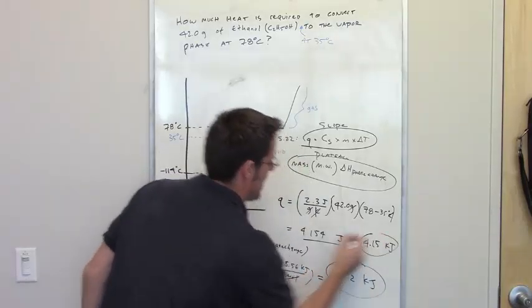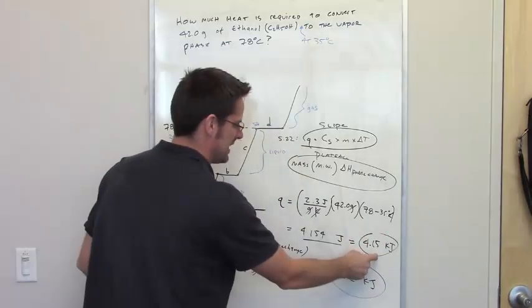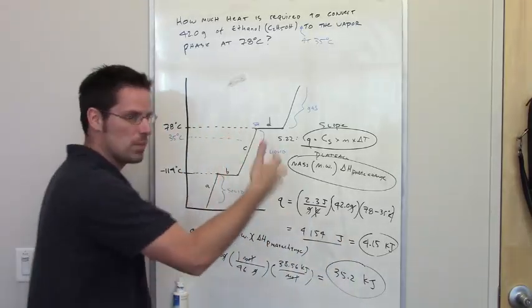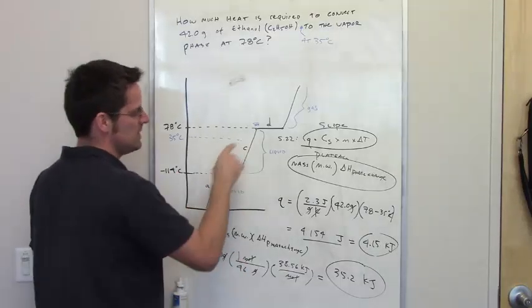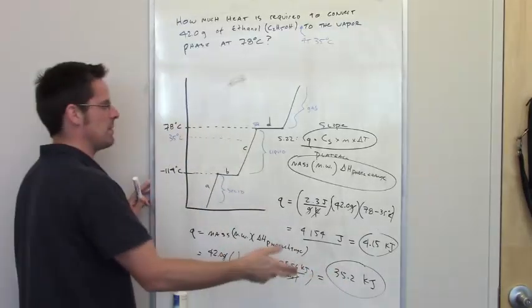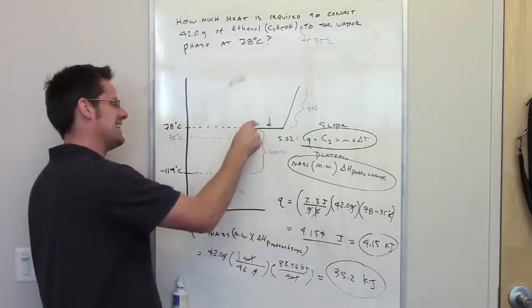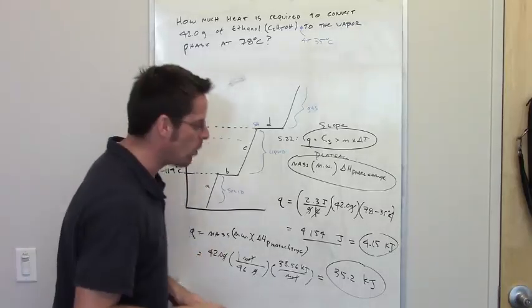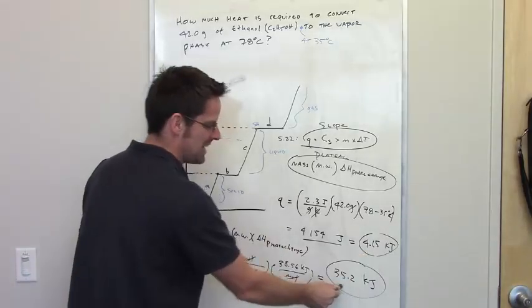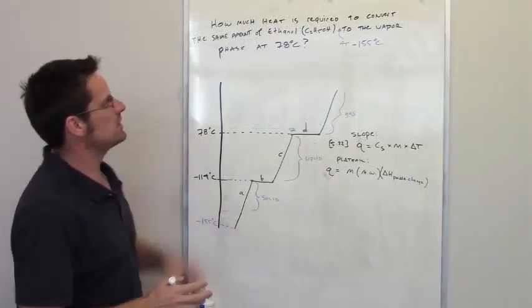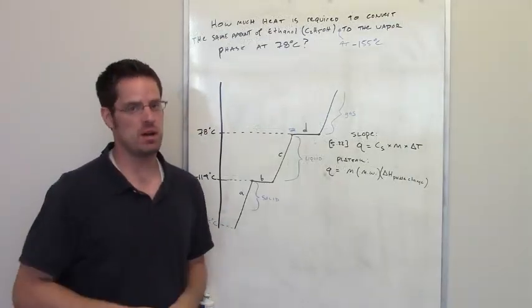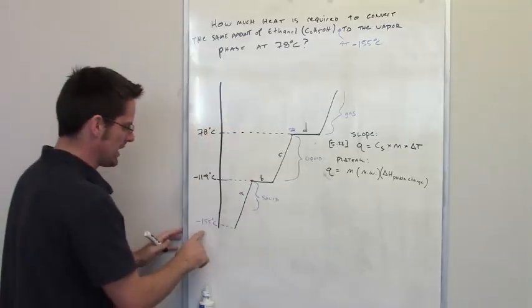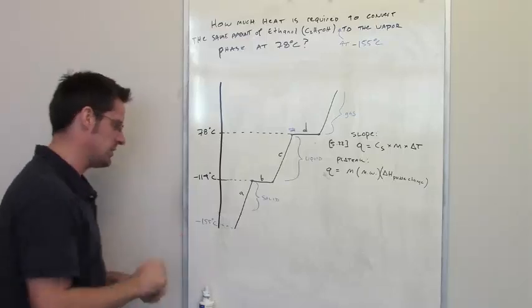So here are the two amounts: 4.15 kilojoules to warm the ethanol from 35°C to 78°C, and an additional 35.2 kilojoules to vaporize it completely. The next part of the question asks how much heat is required to convert the same 42 grams to the vapor phase, but starting all the way down at negative 155 degrees Celsius.